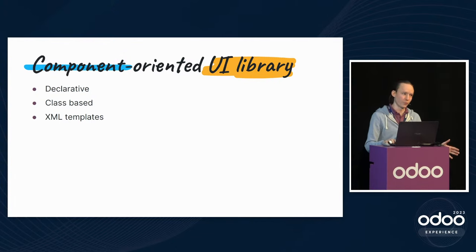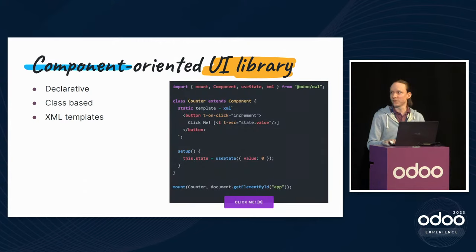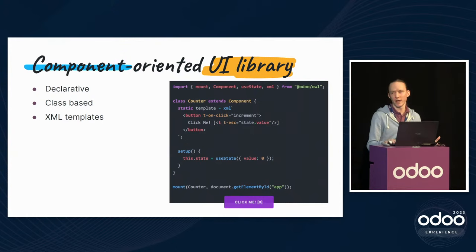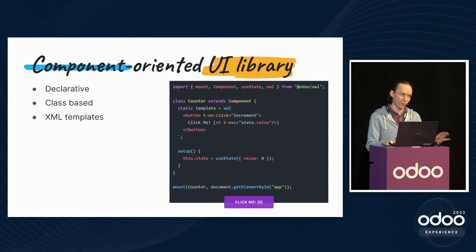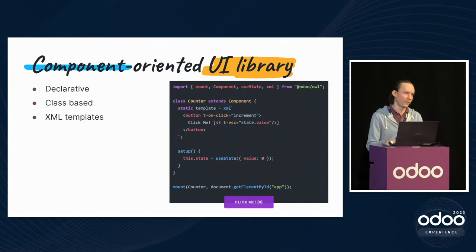OWL is class-based, unlike React which is mostly oriented toward function components. We use classes for all our components and there are very good reasons for that. We also use XML templates — in React you'd use JSX, a syntax extension over JavaScript. We have good reasons to use XML instead, which I'll get into. This is an example of a simple OWL counter component, very similar to a React class component.